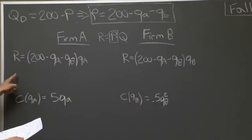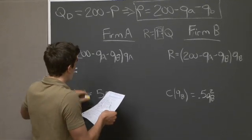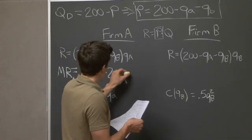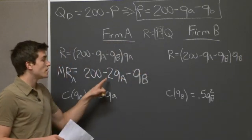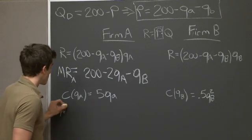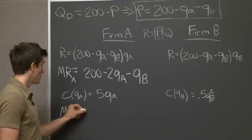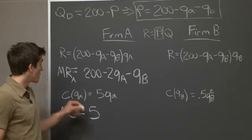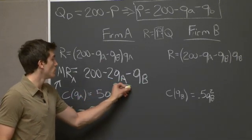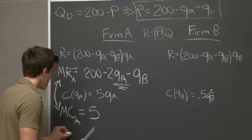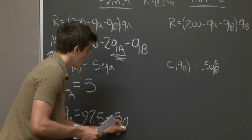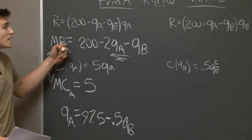Solving for firm A's marginal revenue, we find that MR for firm A is equal to 200 minus 2QA minus QB. It makes sense that the more firm A and firm B are producing, the lower the revenue they'll take in. The marginal cost for firm A, taking the derivative of the total cost function, is equal to 5. Setting marginal cost equal to marginal revenue for firm A and solving for QA, we find that QA equals 97.5 minus 0.5QB. This is firm A's reaction curve.